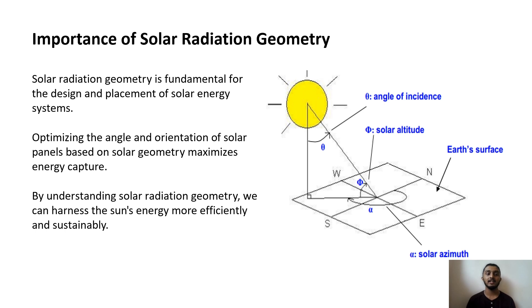Solar radiation geometry is fundamental for the design and placement of solar energy systems. Optimizing the angle and orientation of solar panels based on solar geometry maximizes energy capture. By understanding solar radiation geometry, we can harness the sun's energy more efficiently and sustainably.